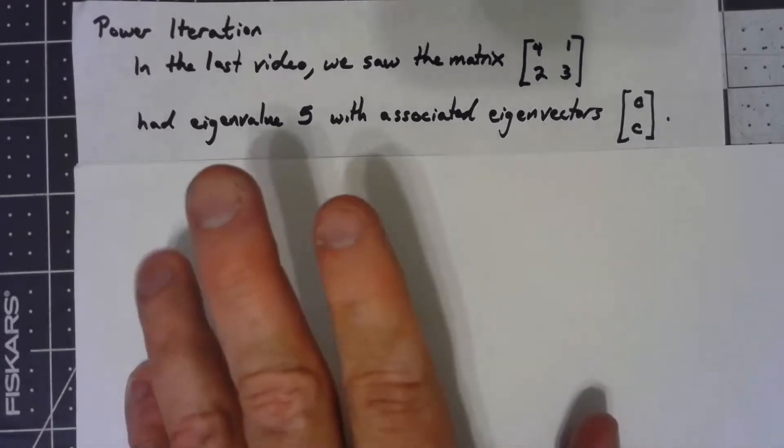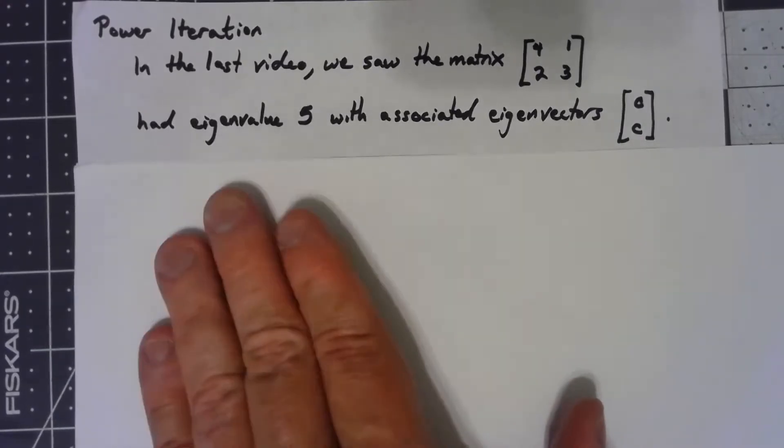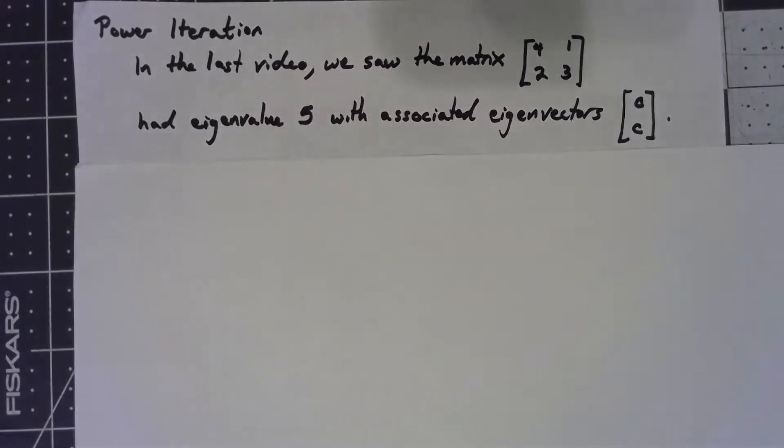In the last video, we were working with the example [4, 1; 2, 3], and we said that it had an eigenvalue of 5, and the associated eigenvectors, we said [1, 1], or any multiple of that. So anytime the two entries are equal, we've got an eigenvector.